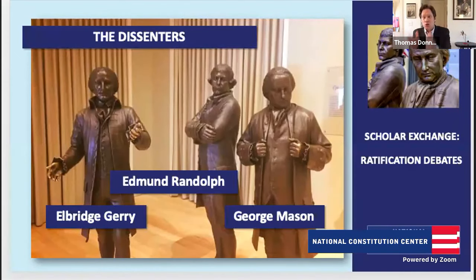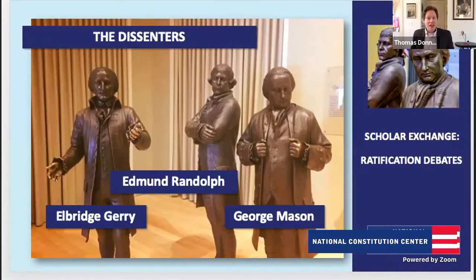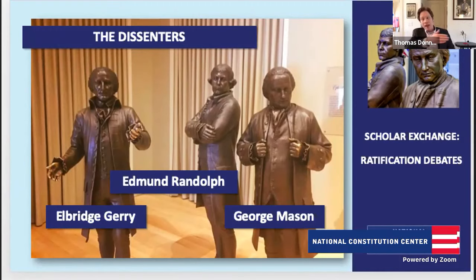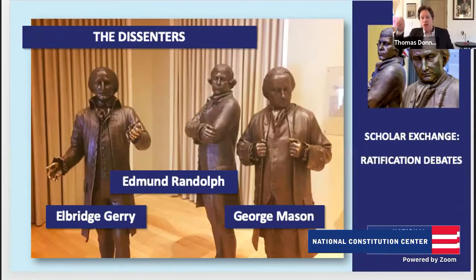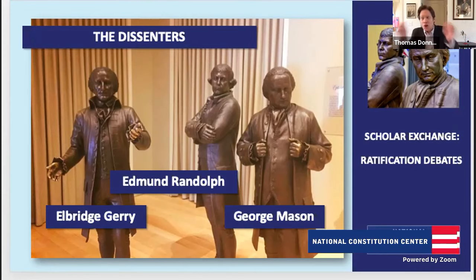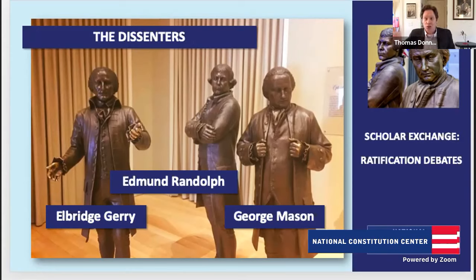So what happens after that? The Constitution itself sets up a process for ratification in Article 7. What it says is that the Constitution is ratified when nine of 13 states decide to ratify it through state ratifying conventions. Over the course of the next roughly year, each state holds elections for delegates to state ratifying conventions, and they hold conventions where the task is yay or nay — do we want the new Constitution or not? We see Americans line up on both sides of this question. The supporters of the Constitution we call the Federalists, and the opponents we call the Anti-Federalists.